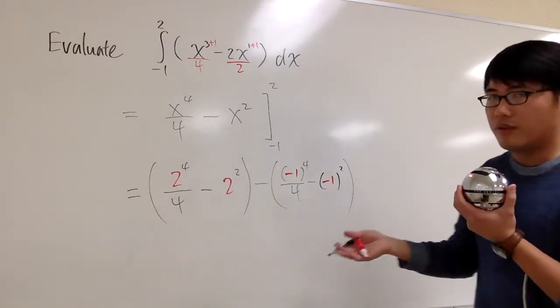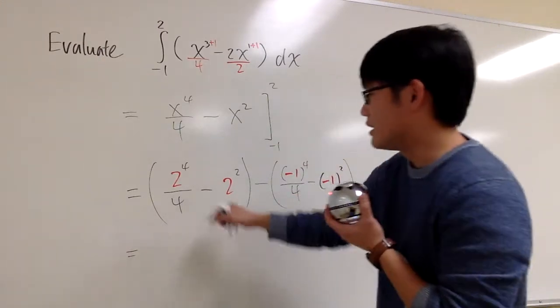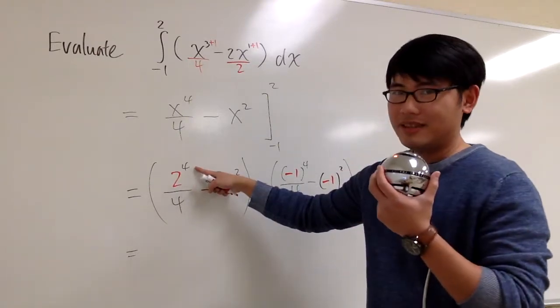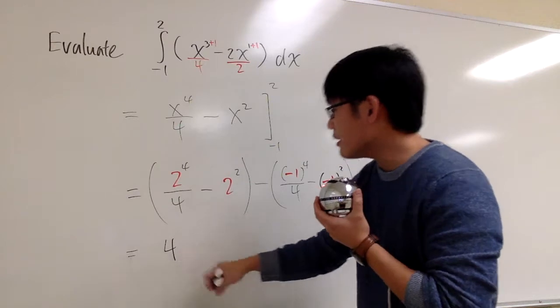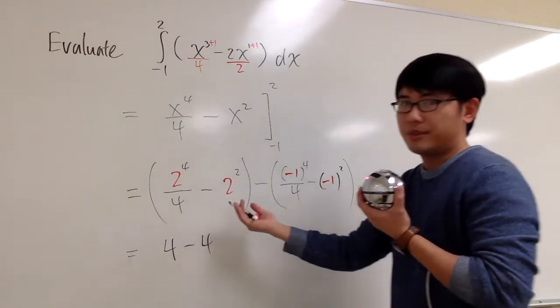And now the rest is just a matter of working out the arithmetic. So if you would like, let's just work this out together for the first time. 2 to the fourth power is 16. 16 divided by 4 is 4. And minus 2 squared, which is 4. So that part is going to be 0.